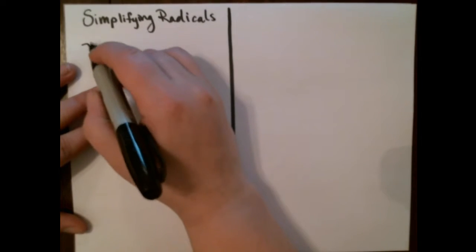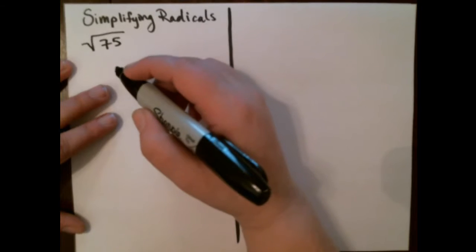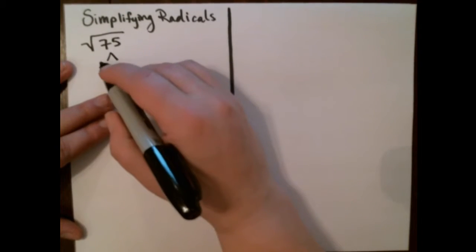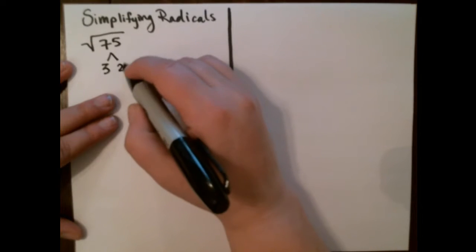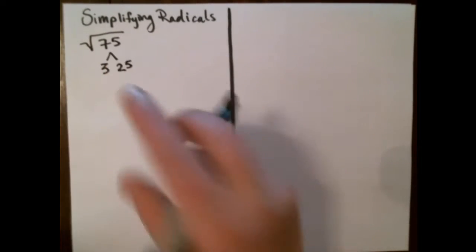Let's just do a couple quick examples. Let's say that I have the square root of 75. Again, we're just gonna break this down into our factor tree. I can think of this as 3 times 25. Honestly, I think of this as money. I'm thinking 3 quarters.